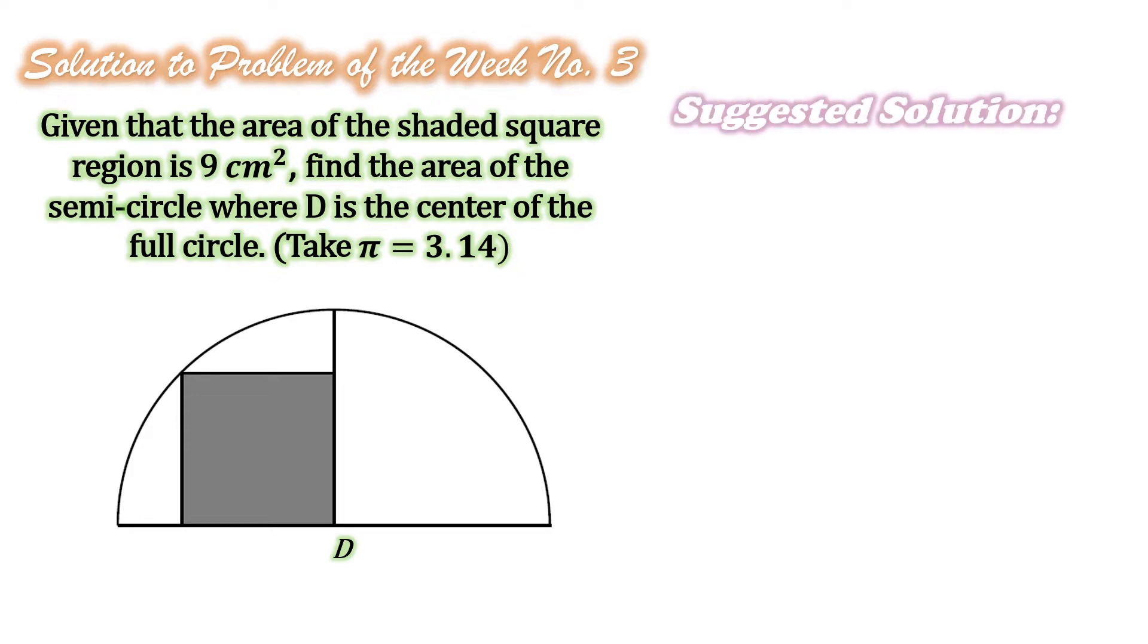Here is our suggested solution. Notice that the radius of the semicircle is the same as the diagonal of the square region.